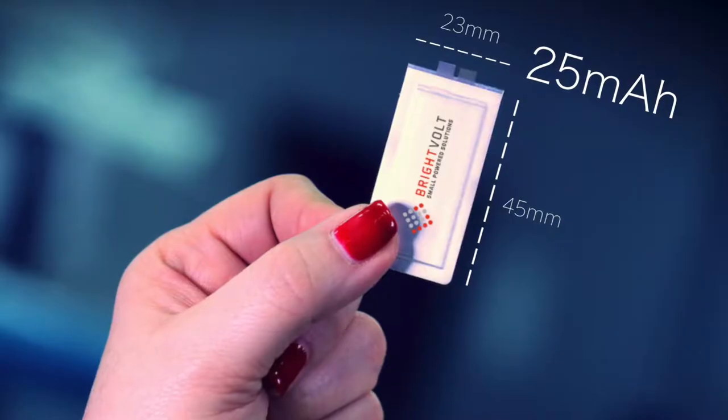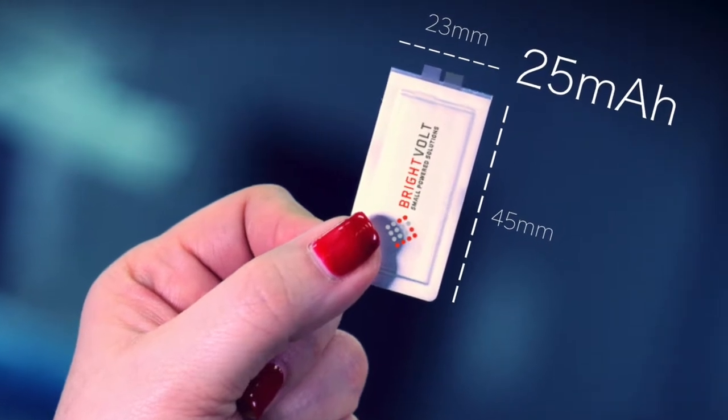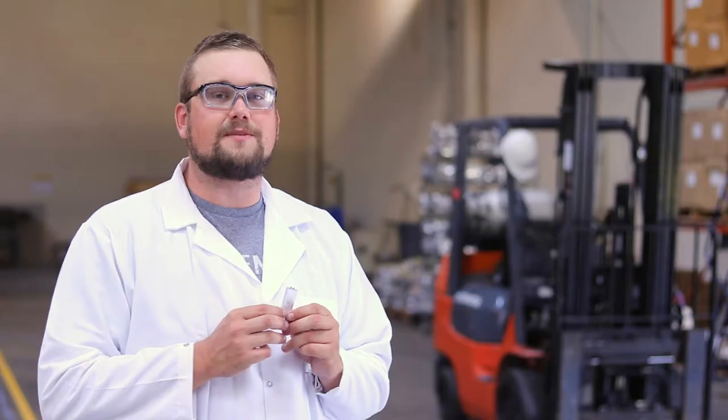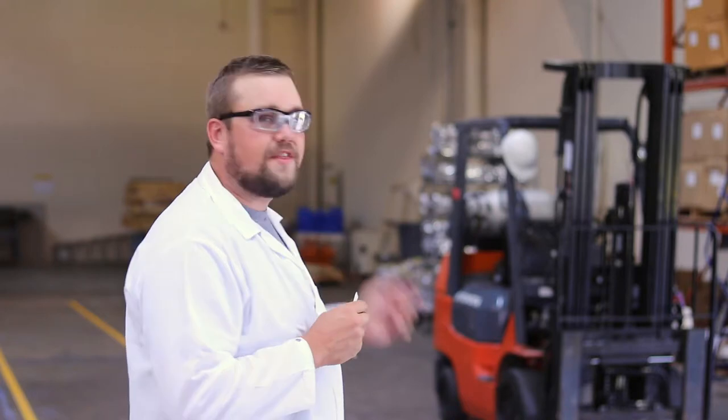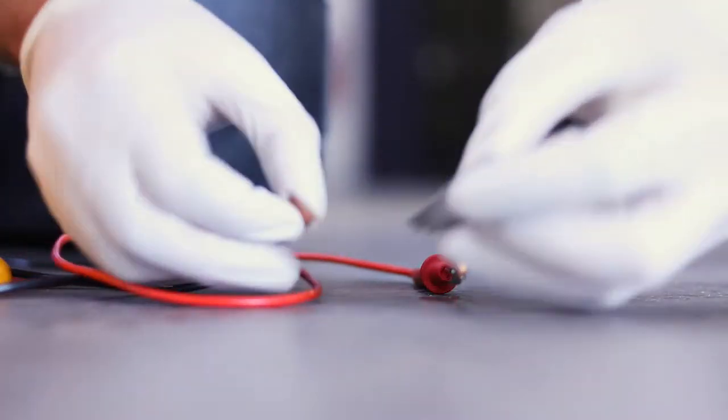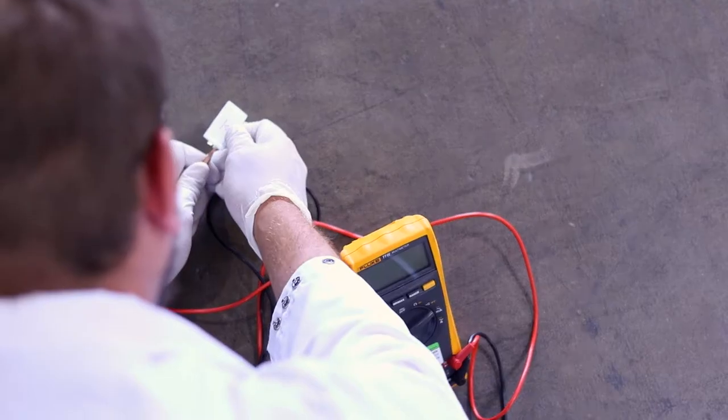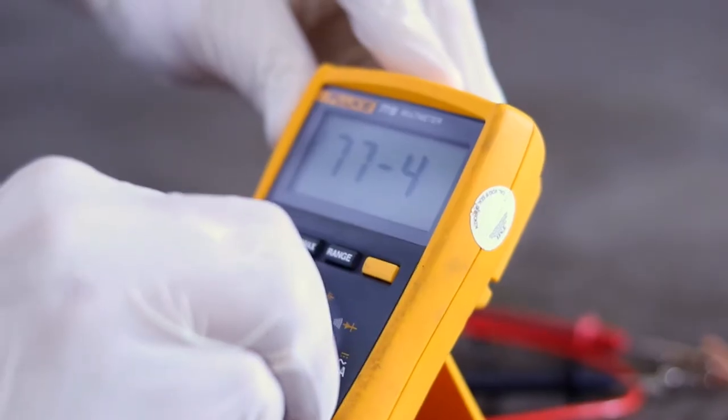We have a 25 milliamp hour 45 by 23 battery, and we're going to put it under some serious pressure by running it over with a 10,000 pound forklift. What we're going to show here is that these batteries maintain a constant voltage despite being put under some serious pressure.